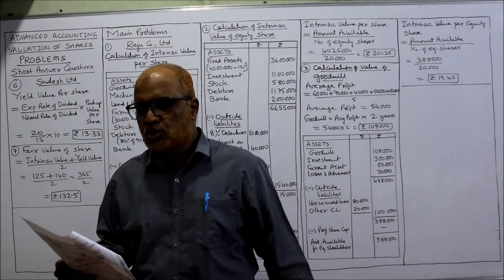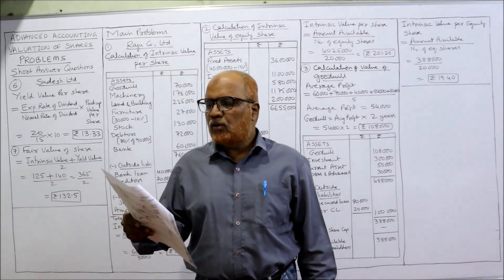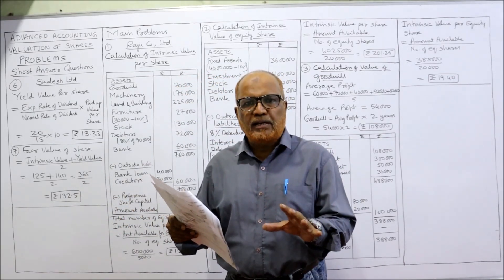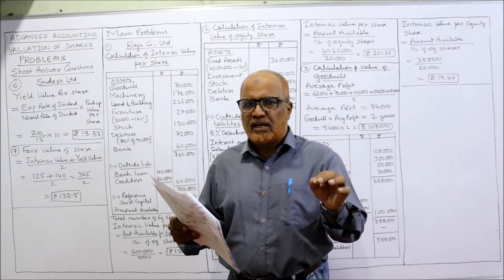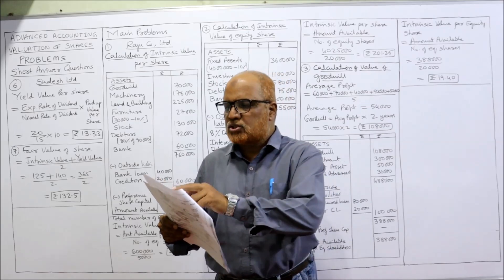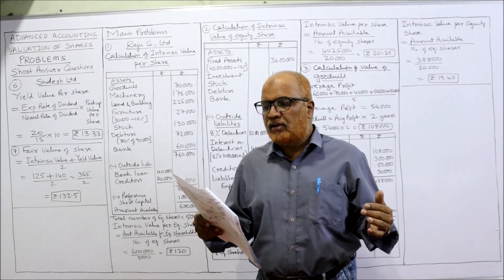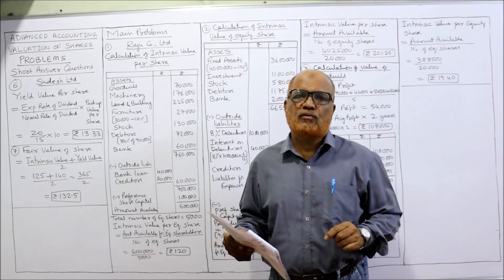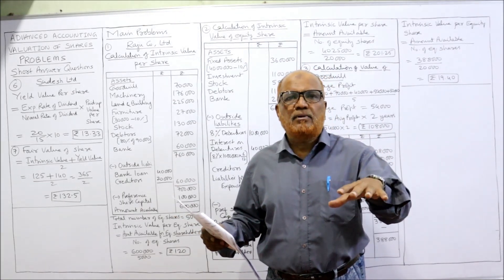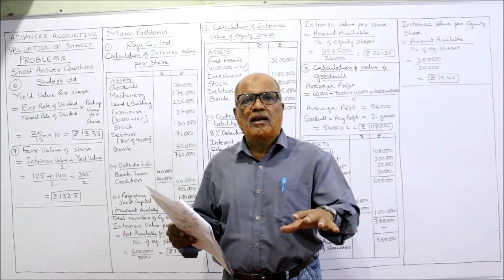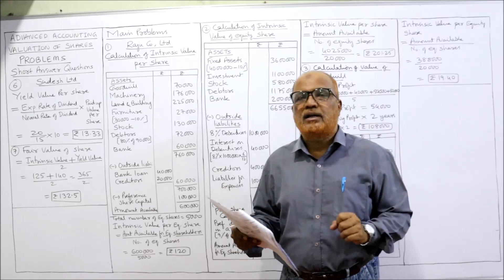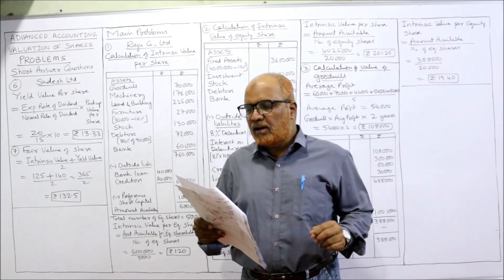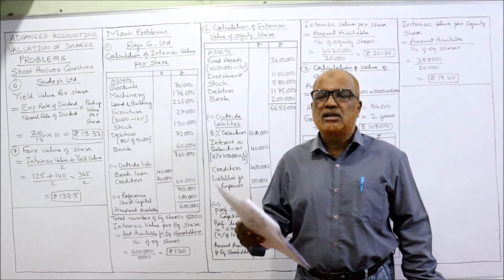Now see the 6th problem — Short Problem 6. Assessing the yield value of shares of Sudesh Limited. The average rate of dividend declared by Sudesh Limited is 20%, whereas the normal rate of dividend declared by companies engaged in similar business is 15%. This is the normal rate of return. So the other companies are earning on an average 15%, but Sudesh Limited is earning 20% — that is the expected rate of dividend. Paid up value of each share is ₹10.